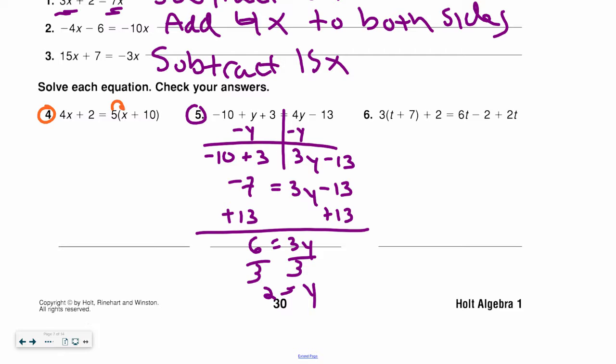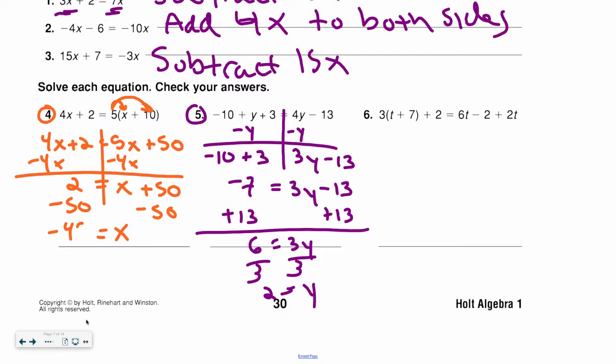For my number 4, that is the distributive property, when there's a number in front of the variable. And all it is, is multiplying. So I'm multiplying both of those numbers. Now I combine my like terms, my x's, and then I'm just solving normally. So I would subtract the 50, and I have negative 48.